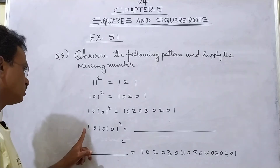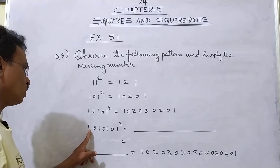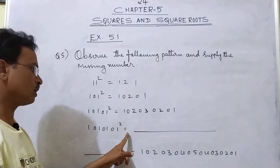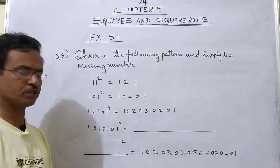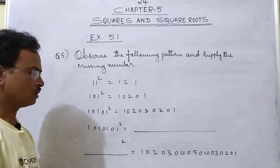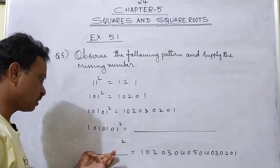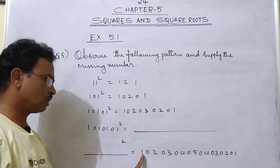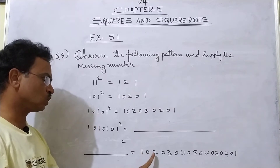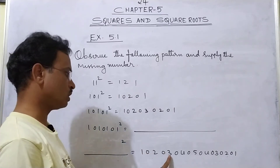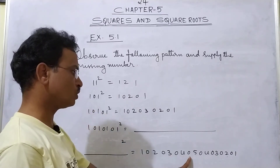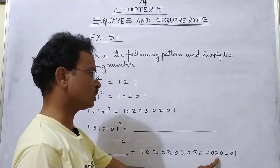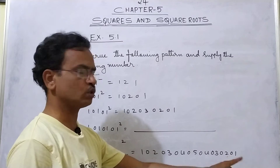Next, 1010101 squared is equal to dash — that is the missing number. Then dash here, 2 is given, then 10203040504030201.